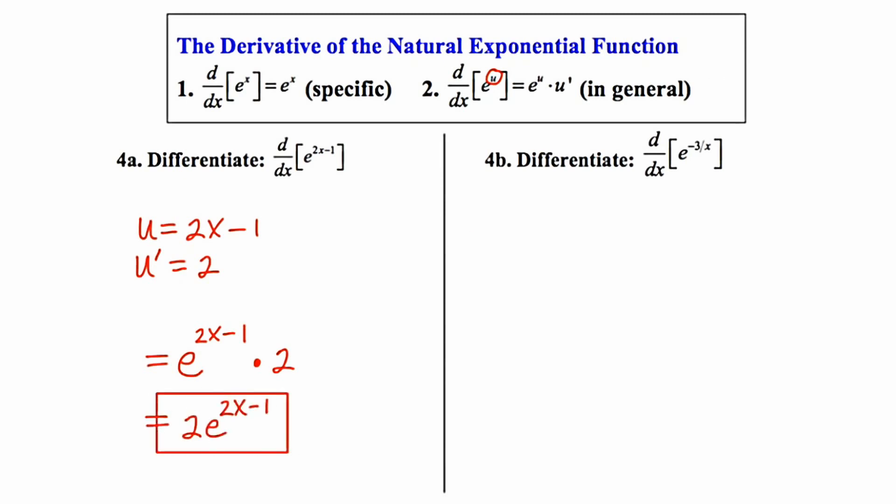Let's try another example. In 4b, we're asked to find the derivative of e to the negative 3/x. So our exponent is something a little bit more complicated than just an x. So let's go ahead and allow u to equal that exponent.